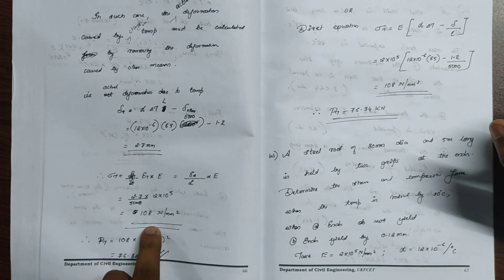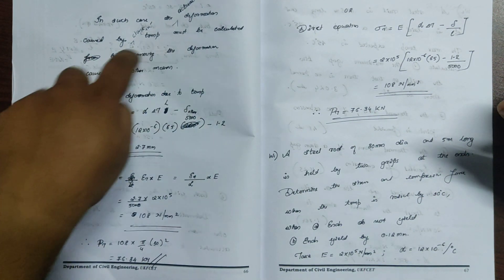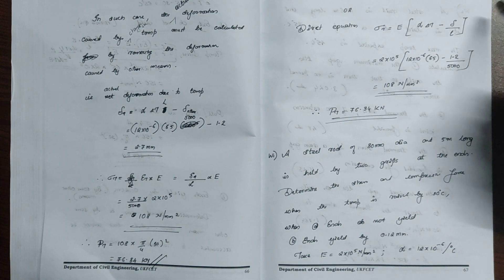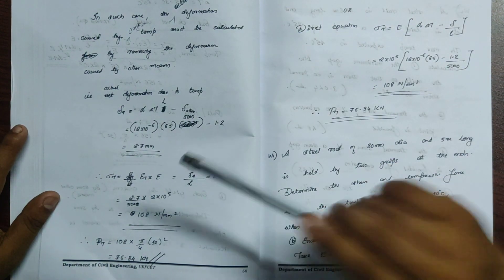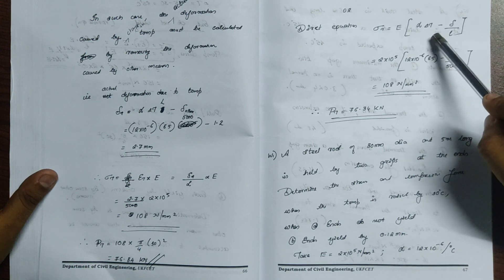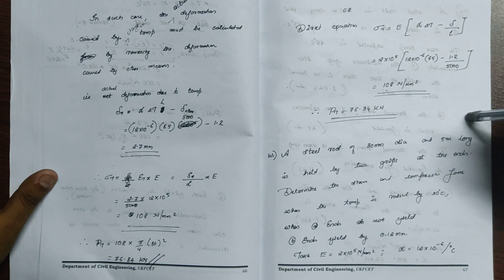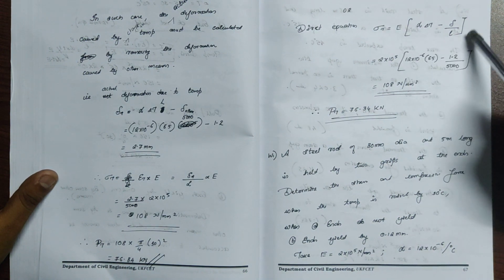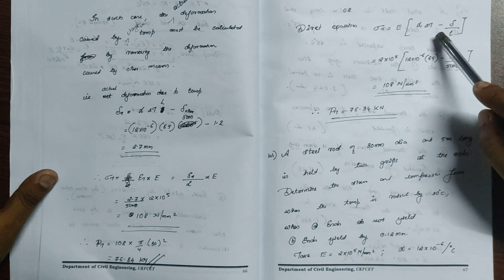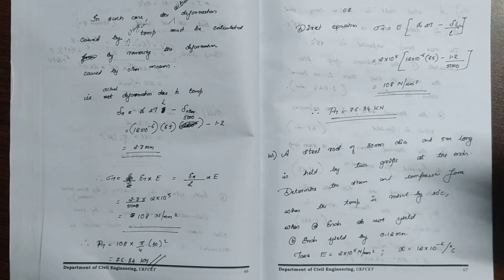Now we have force. Stress into area gives the force: 76.34 kN. The total deformation is the key result. This leads to the direct equation: sigma T equals E into alpha into delta T minus delta divided by L. This is the change in length due to other causes divided by L — the direct thermal stress equation.